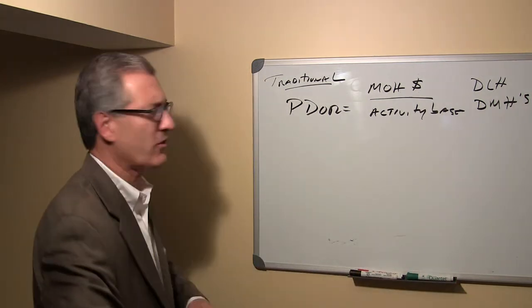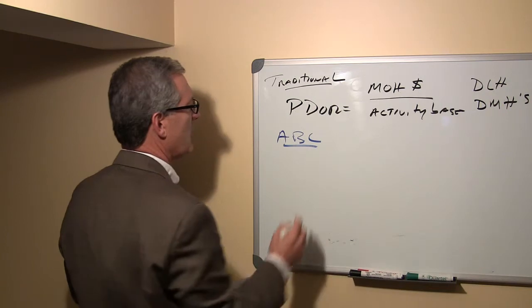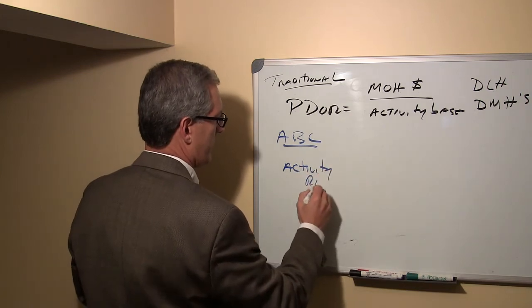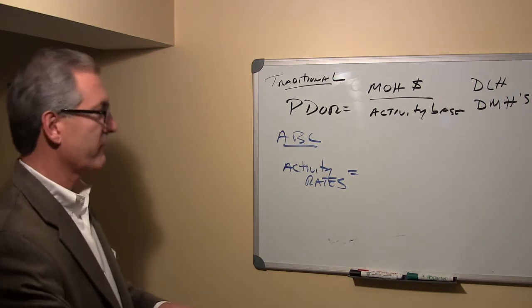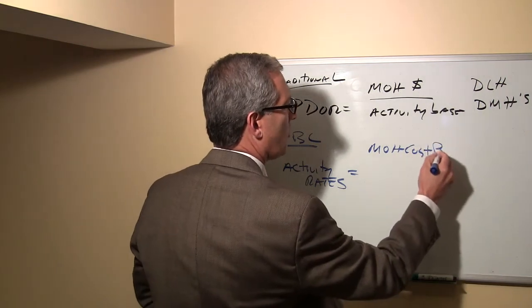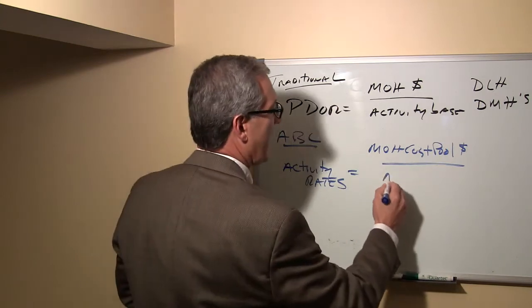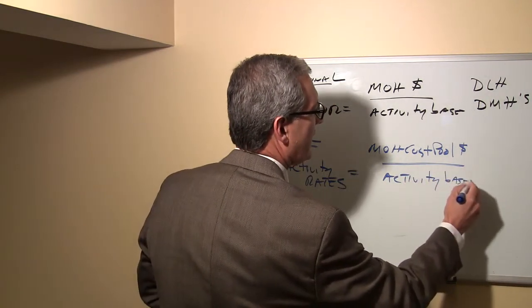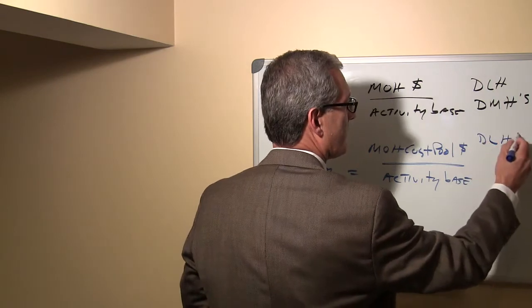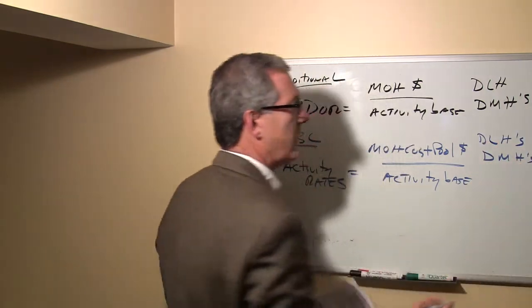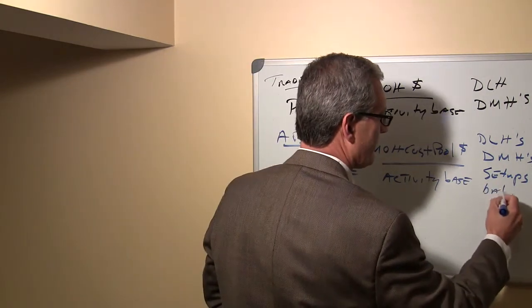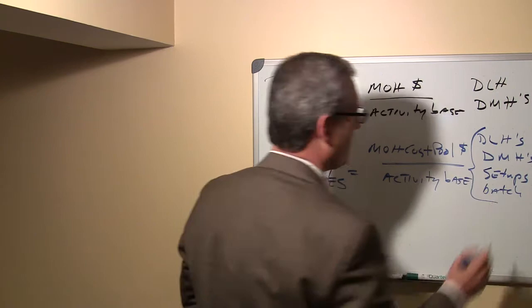When we begin to talk about activity-based costing — ABC — we're looking at multiple activity rates. These activity rates are looking at the manufacturing overhead cost pool dollars divided by an activity base. And these activity bases are many things: they could be direct labor hours, direct machine hours, number of setups, or batches. They are multiple things as an activity base.